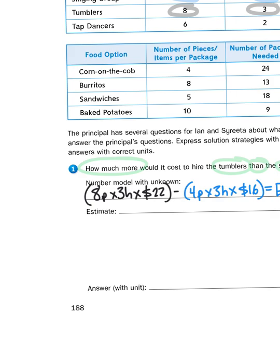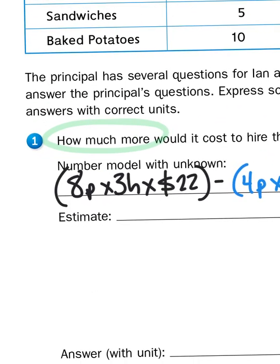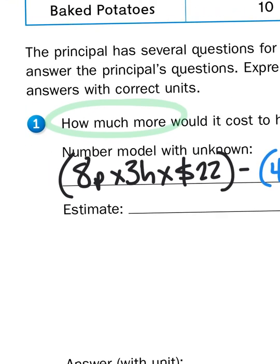Now I need to come up with some estimates that are going to help me get into the ballpark of the right answer. So I'm going to start with the tumblers. Now if I round each of these numbers to the nearest 10, I'm going to run into some trouble with 3, because if I round 3 to the nearest 10, it's going to round down to 0. And I don't want to multiply anything by 0, so I'm going to leave 3 where it is. But I will use 8 and round that to 10.